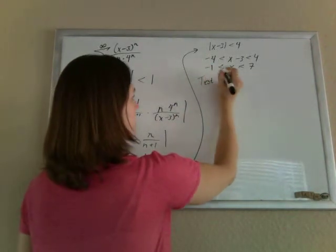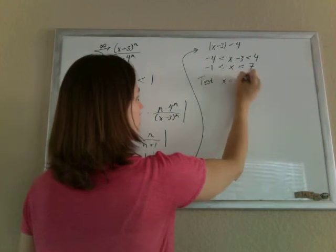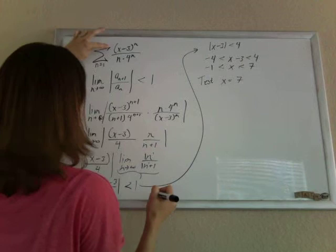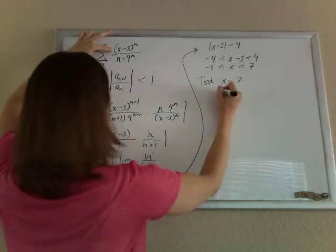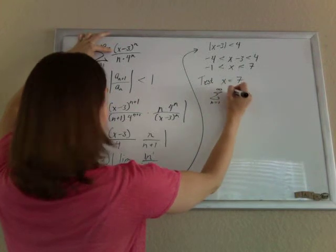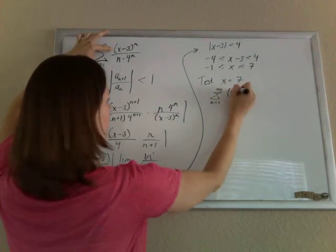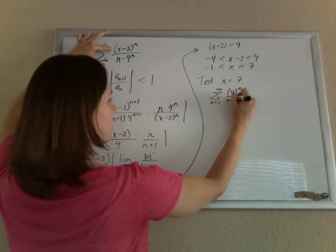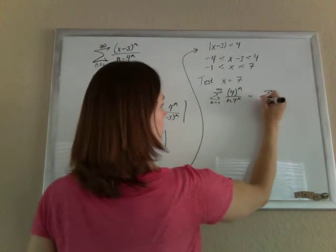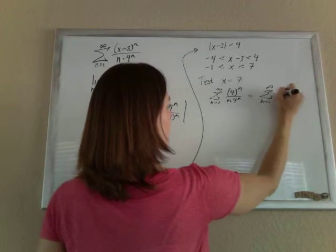So we're going to test x equals 7. So if x is 7, then we're going to plug that into here, and we're going to get n equals 1 to infinity. 7 minus 3 is 4 to the n over n times 4 to the n. So those n's cancel, and you're just getting 1 over n.